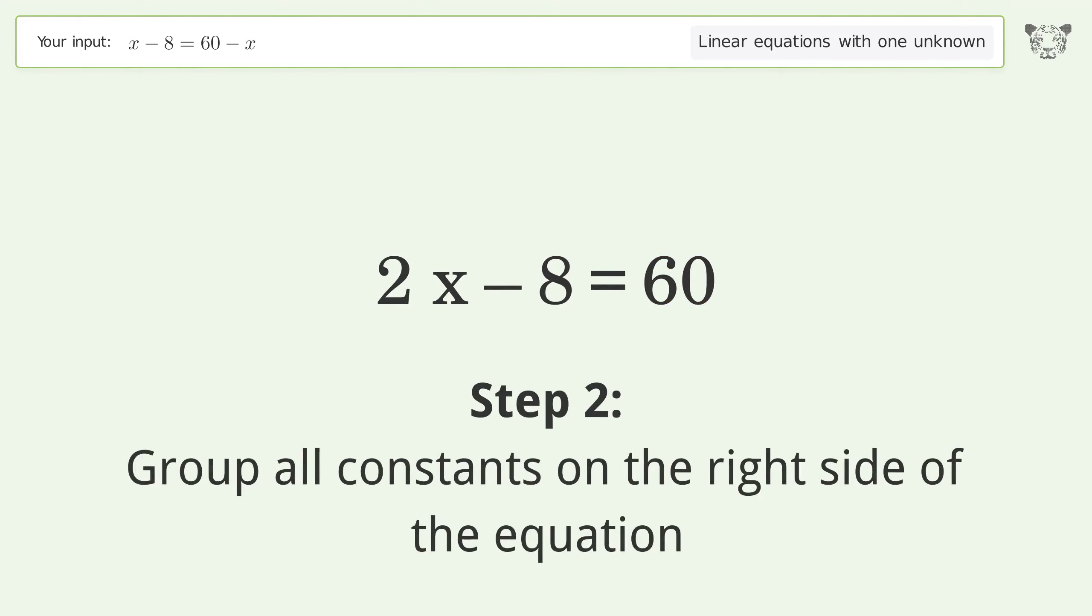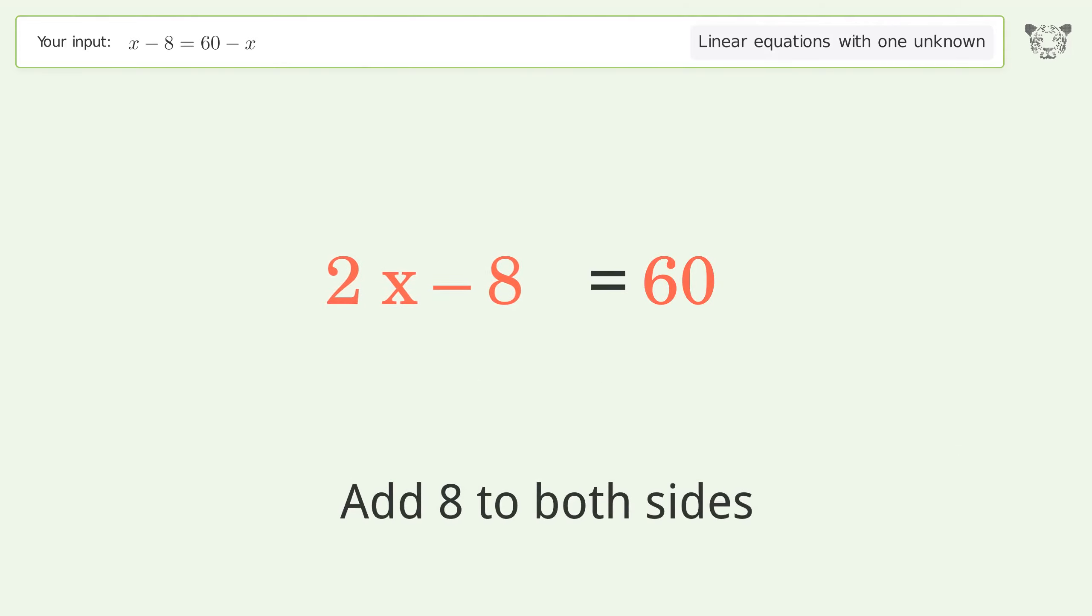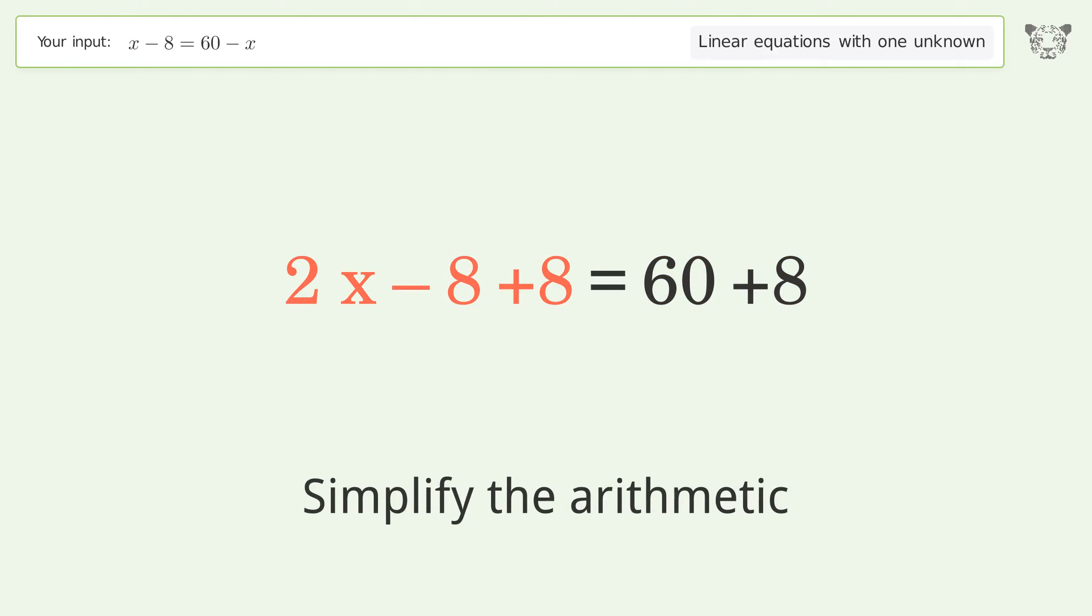Group all constants on the right side of the equation. Add 8 to both sides. Simplify the arithmetic.